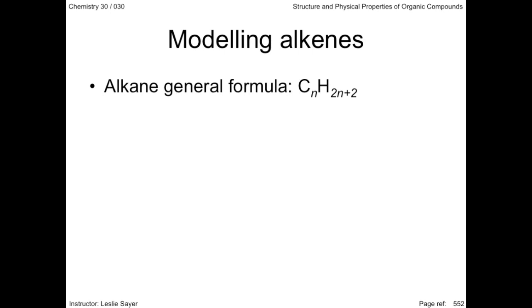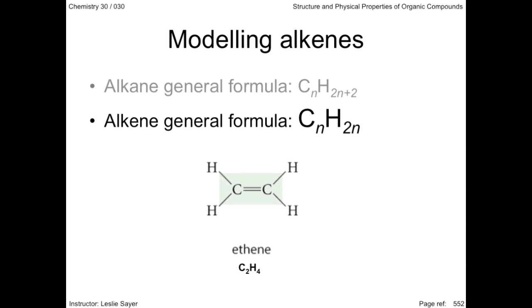If the alkane general formula has 2n plus 2 hydrogens and the difference between alkanes and alkenes is 2 hydrogens, then the general formula for alkenes is CnH2n.